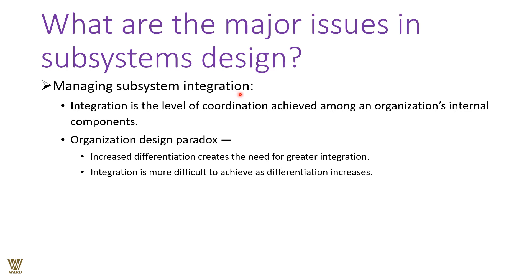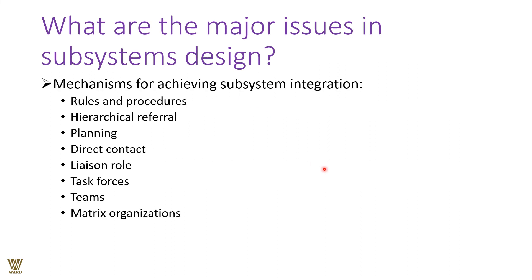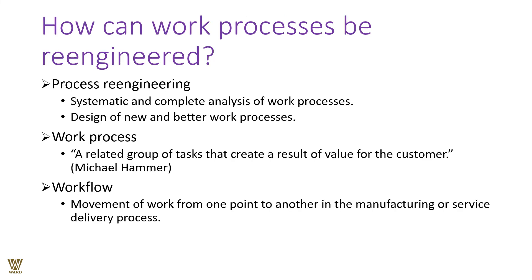The more differentiation there is, the more integration is required, and integration becomes more difficult as differentiation increases. Mechanisms for achieving subsystem integration include uniform rules and regulations, hierarchical referral, planning, direct contact, liaison roles, task forces, teams, and matrix organizations. These serve as nodal points or ombudsmen to address overlapping issues and ensure coordination across the organization.